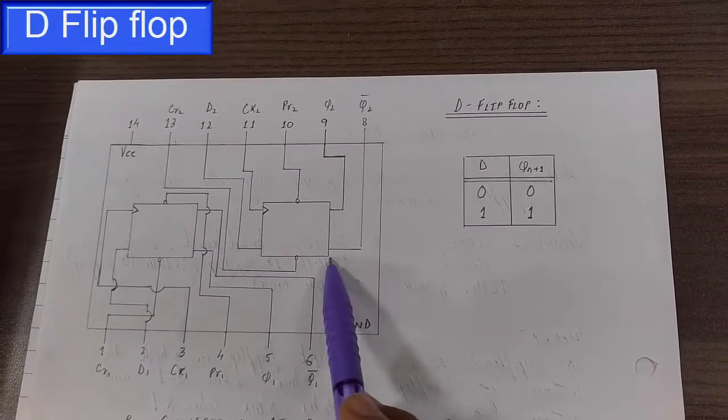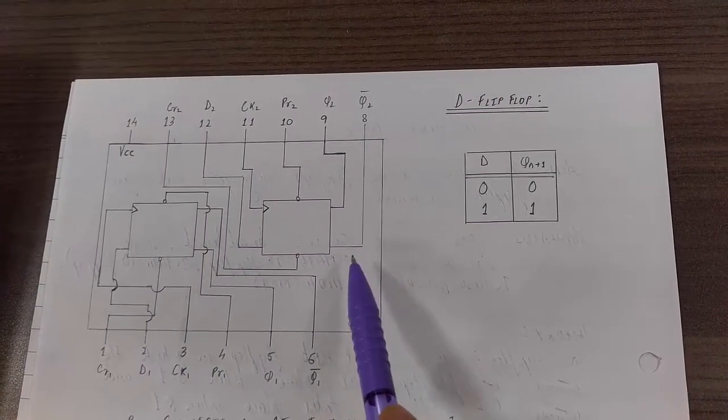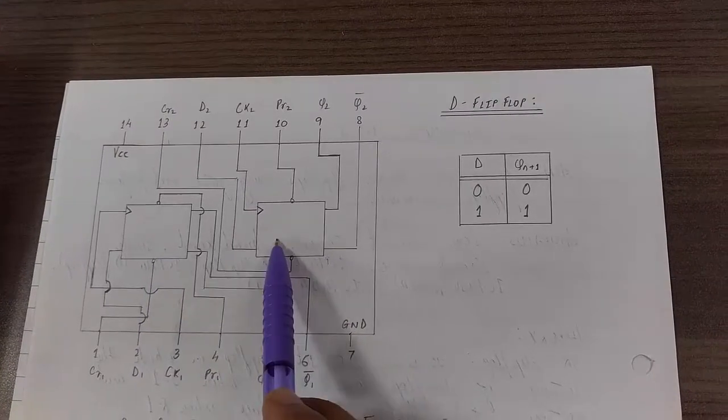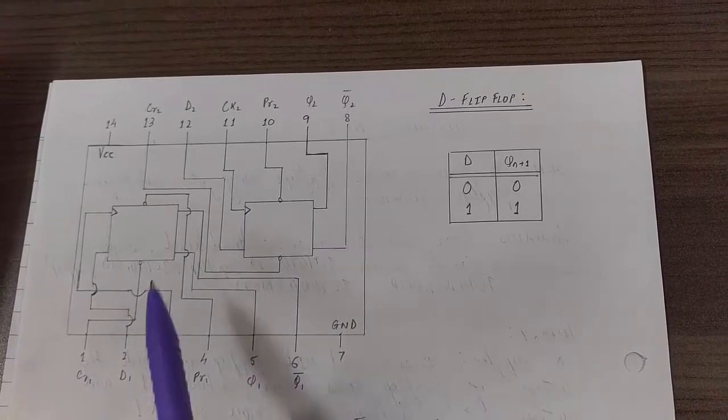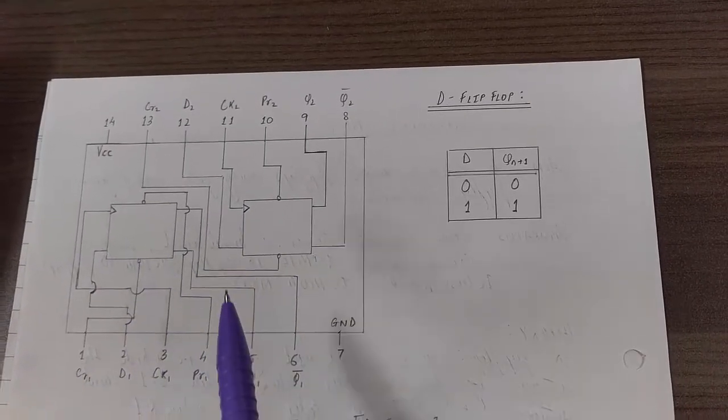This is the pin diagram for IC 7474 which is a D flip flop IC. It has 2 D flip flops inside this. That is delay flip flop. We have to verify the truth table for D flip flop. We will use only 1 flip flop out of this 2.